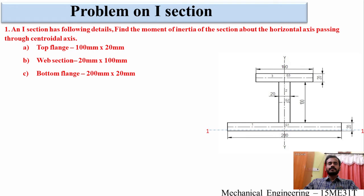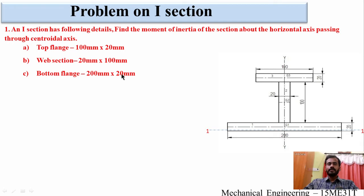Begin with the first problem. An I-section has the following details. Find the Moment of Inertia of the section about the horizontal axis passing through the centroidal axis. We have the dimensions: top flange is 100 mm x 20 mm, web section 20 mm x 100 mm, bottom flange 200 mm x 20 mm.